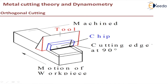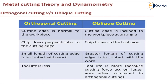Now let us see the differences between oblique and orthogonal cutting. As already discussed, the cutting edge is normal to the workpiece in orthogonal cutting, and inclined at an angle other than 90 degrees in oblique cutting. The chip flows perpendicular to the cutting edge in orthogonal cutting, while in oblique cutting the chip flows on the tool face. A small length of the cutting edge is in contact with the work in orthogonal cutting, whereas a greater length is in contact in oblique cutting. Consequently, tool life is less in orthogonal cutting, and greater in oblique cutting because the cutting force acts over a larger area.